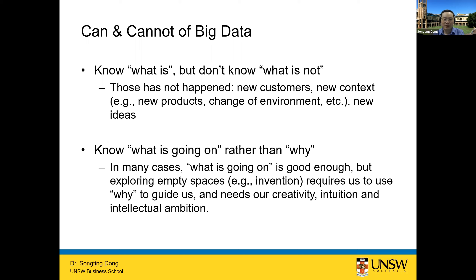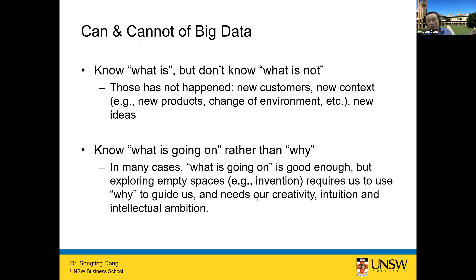Big data also doesn't know about new customers, new products, new ideas, or new environments — situations that have never happened. There's no data for those. Also, big data is good at knowing what is going on but not why — we've talked about this a lot. They only care about prediction accuracy and correlation, not the reason behind it. Because of that, big data is good for short-term prediction. In the long term, understanding why gives you better leverage to look further ahead. Understanding the reason lets you predict beyond the very short term.